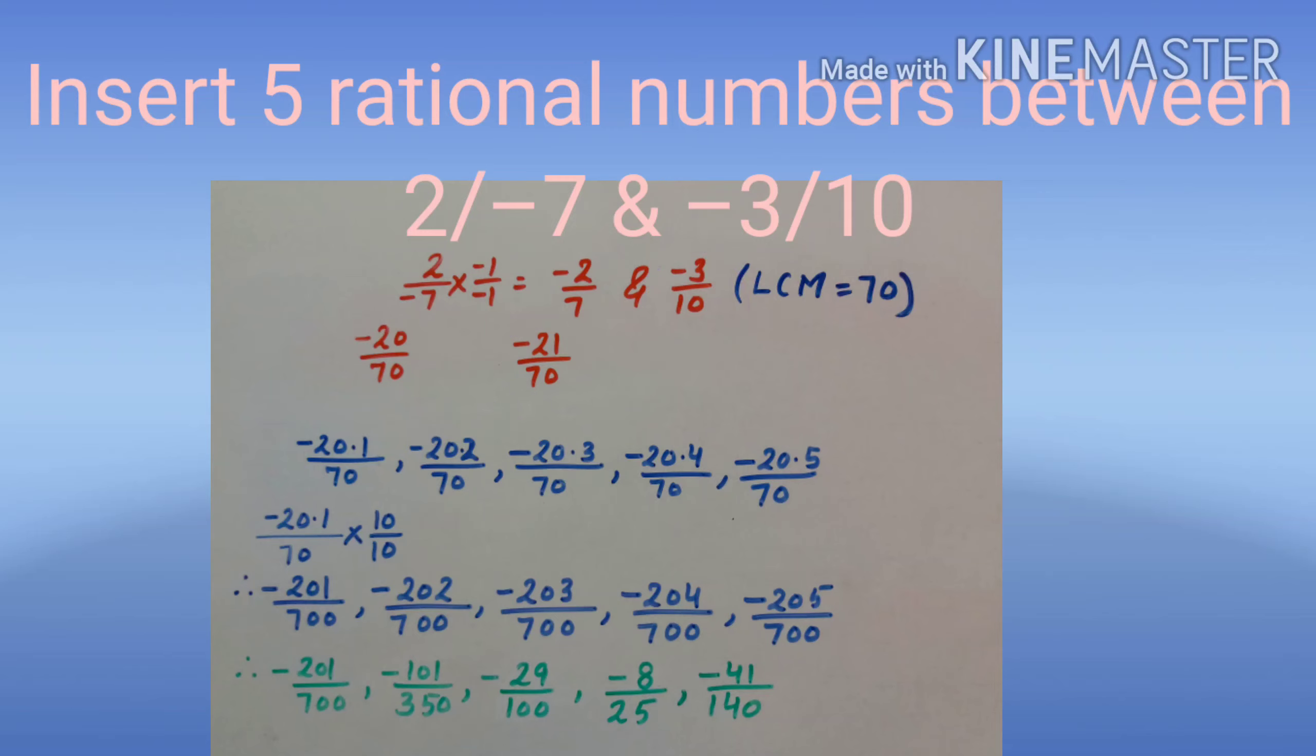For first method, we will insert required decimal numbers between these numerators with the same denominator. That is, five decimal numbers between minus 20 and minus 21 with denominator 70.